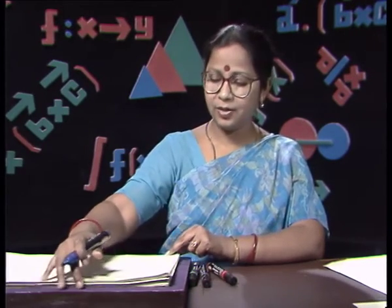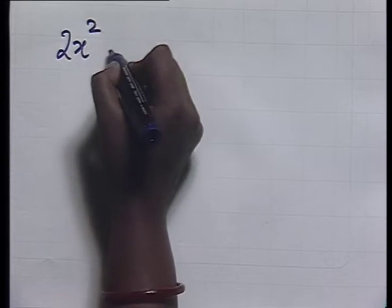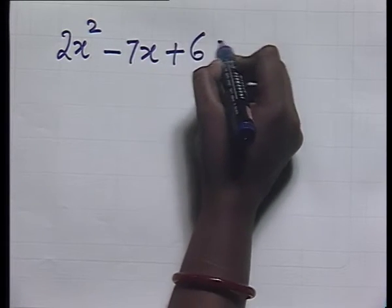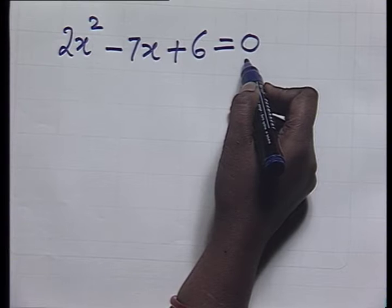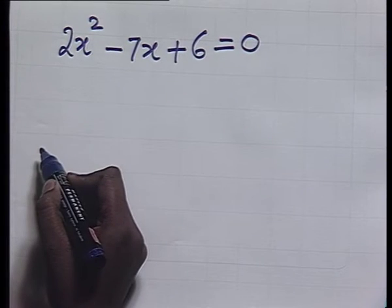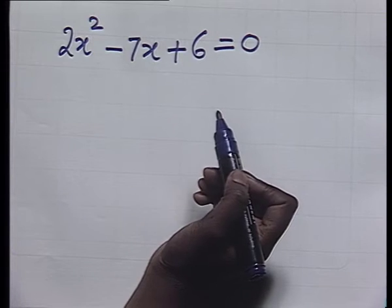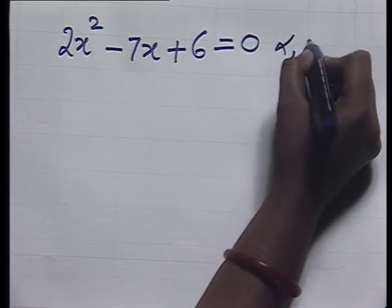For example, suppose we are given the equation 2x² - 7x + 6 = 0, and we have to construct another equation whose roots are twice the roots of this given equation. One way would be to find the roots, double them, find the sum and product, and then construct the equation — but that would be very lengthy. So let us find a shortcut. Let the roots of the given equation be α and β.